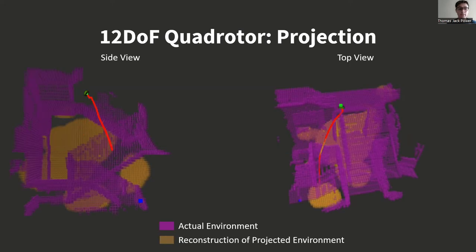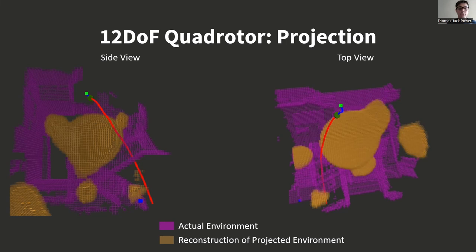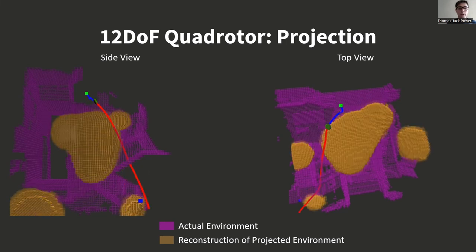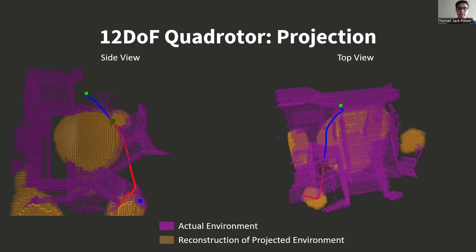The projection step effectively hallucinates obstacles in order to steer the trajectory away from potential collision, while ignoring features of the environment which are not relevant for the current MPC task.